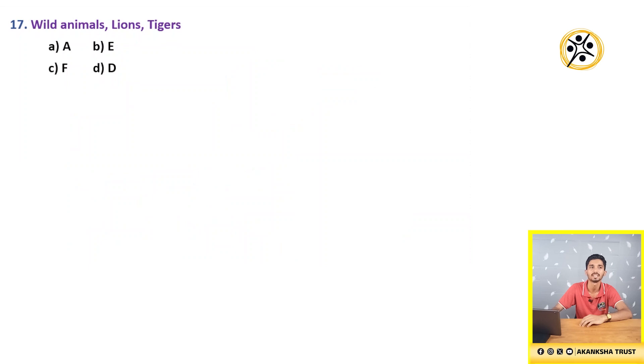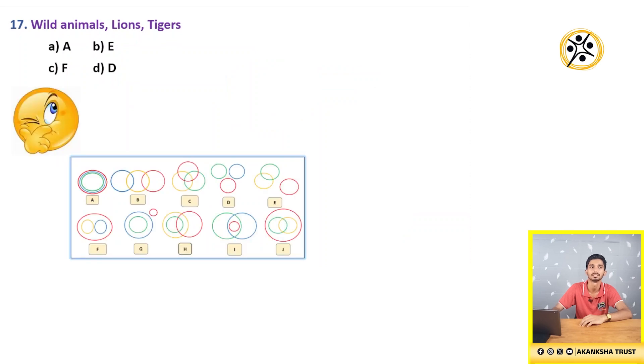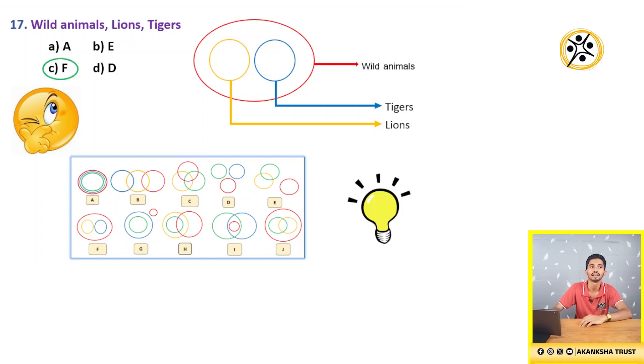17th question: Wild Animals, Lions, Tigers. First circle represents wild animals. Inside wild animals, you are having lions as well as tigers. Both lions and tigers are wild animals. Hence, they are placed within wild animals. This figure holds good with F. Hence, the correct option is C, i.e. F.